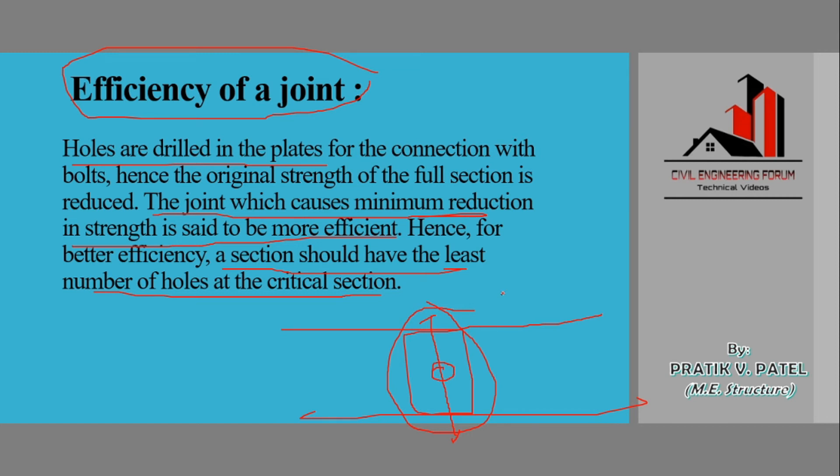So what would happen is we'll have to provide only one bolt hole at the center of this joint. This will increase its efficiency. So depending on the functions, we can have the minimum number of bolt holes in any plate.